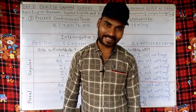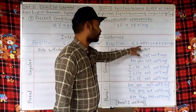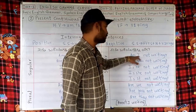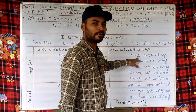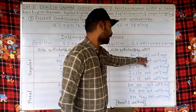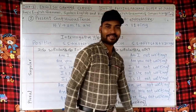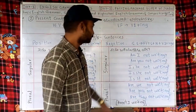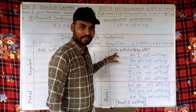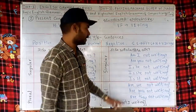Now let's look at interrogative negative sentences. Sentence structure: here also we use the helping verb first, then subject, then 'not', then V1 plus ING, plus question mark — that we should not forget. The sense or time it suggests: Am I not writing? — Naanu Bariyuttillave?